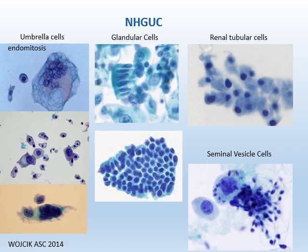Glandular cells can be columnar or cuboidal, generally seen in instrumented urine. They may be derived from cystitis cystica et glandularis or the female GYN tract. Renal tubular cells are small, generally poorly preserved, with pyknotic and dark eccentric nuclei and granular cytoplasm. They are easier to recognize when they form small clusters or casts. Seminal vesicle cells have enlarged hyperchromatic nuclei, high NC ratio, and can also have prominent nucleoli, mimicking high-grade urothelial cells. The presence of yellow-brown cytoplasmic lipofuscin pigment and sperm in the specimen are important clues in identification. They can also cause abnormal DNA ploidy measurement.